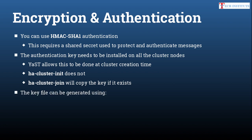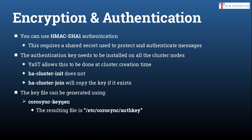You can create the authentication key file using the command corosync-keygen. The result will be a file created at /etc/corosync/authkey. You can then sync this file across cluster nodes using rsync with the -xv flag, or you can manually SCP this file — but in that case you have to maintain proper permissions and location.